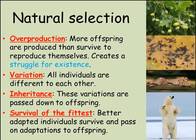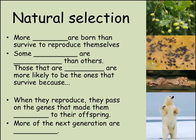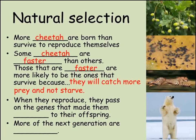We can now explain this variation and inheritance in terms of genes. We can use this model to explain any feature of any living species. For example, how did the cheetah become so fast? More cheetahs are born than survive to reproduce themselves. Some cheetahs are faster than others. Those that are fast are more likely to survive because they are able to hunt more prey and avoid starving. When they reproduce, they pass on the genes that made them fast to their offspring. More of the next generation are fast.